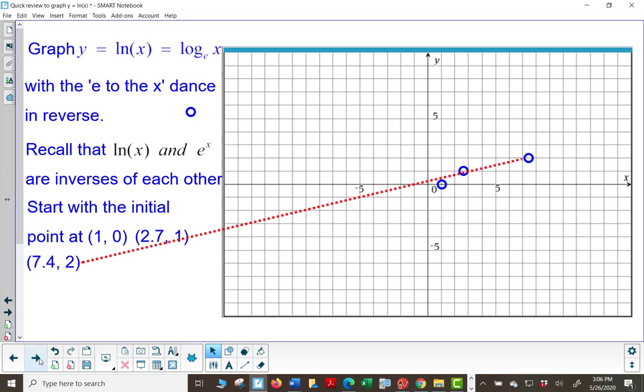7.4, 2 would be the next point, because the natural log of e squared is 2 and e squared is about 7.4.